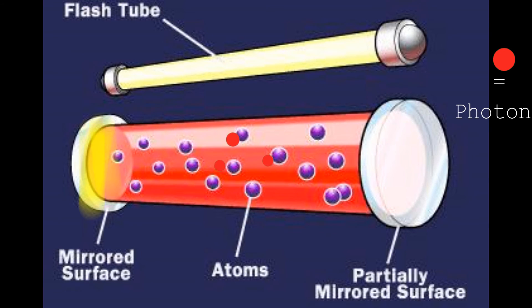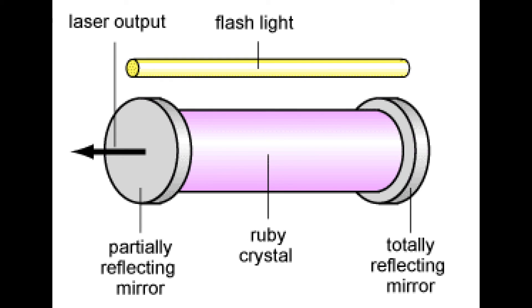Mirrors at each end reflect the photons back and forth, continuing this process of stimulated emission and amplification. The photons leave through the partially silvered mirror at one end. This is laser light.